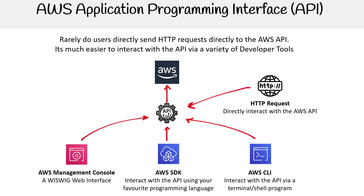If you want to be a good cloud engineer, you can use the AWS Management Console, but you really should focus on your CLI skills and your SDK skills, because those are what you'll use day in and day out. The AWS Management Console can sometimes obscure the underlying APIs and you don't really understand what you're interacting with. The closer you get to the API and understand it, the more successful you're going to be as a cloud engineer or DevOps engineer.